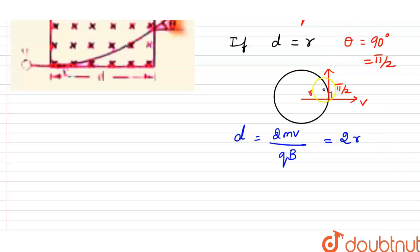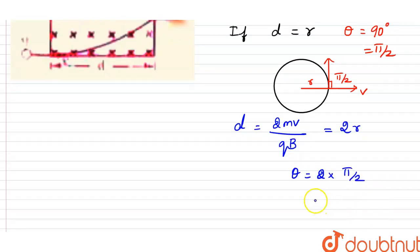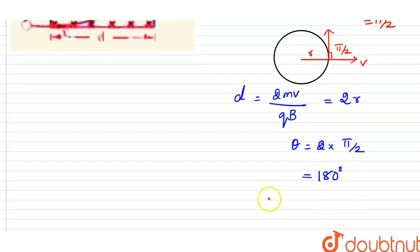What about the angle between them? For D equals R, the angle is 90 degrees. That means D equals 2 times R, it will become 2 times the angle. The angle is pi, that is 2 into pi by 2, or 2 into 90 degrees equals 180 degrees. 180 degrees is pi. The answer is pi. Thank you.